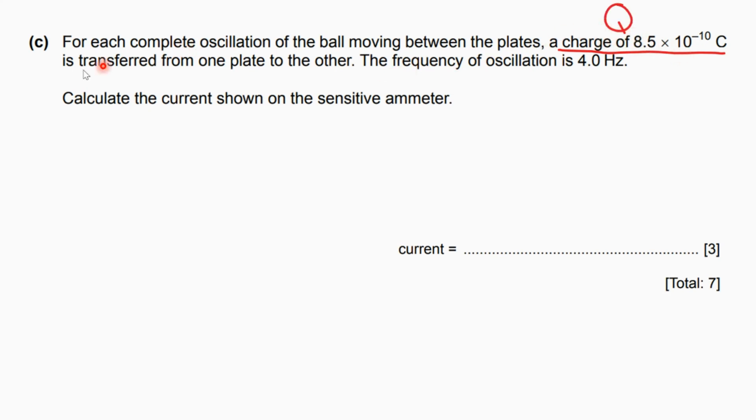This one due to contact or touching as mentioned in the previous section a. The frequency of the oscillation is 4 hertz and the symbol of the frequency is f. Calculate the current shown on the sensitive ammeter.